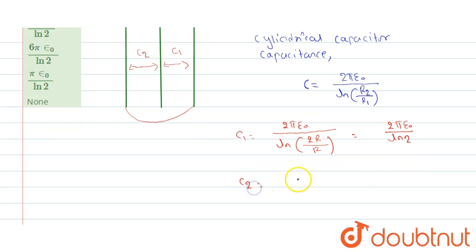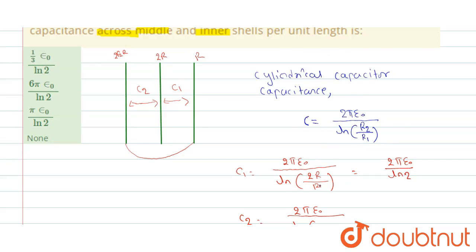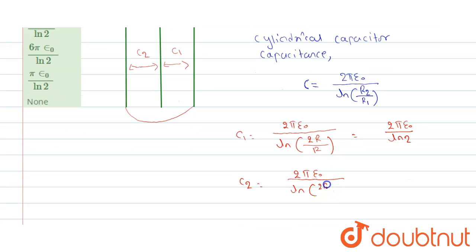Similarly, C2 will be equals to 2π ε₀ divided by ln of outer radius 2√2r and inner radius 2r. So we got C2 equals 2π ε₀ divided by ln of √2.